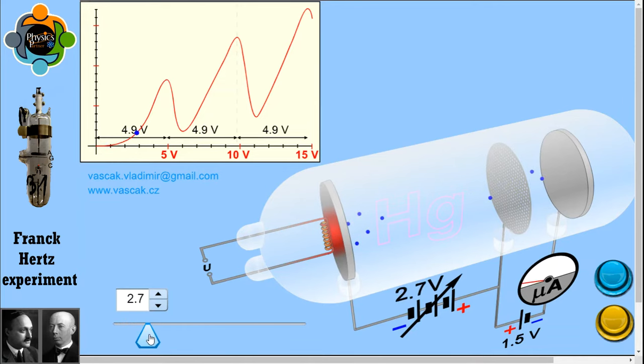You can see on the screen as the accelerating potential increases, the current also increases. But as the accelerating potential reaches a particular value, it reaches 4.9V—that is the particular value for mercury. You can see each electron possesses that much potential and now the collision becomes inelastic.